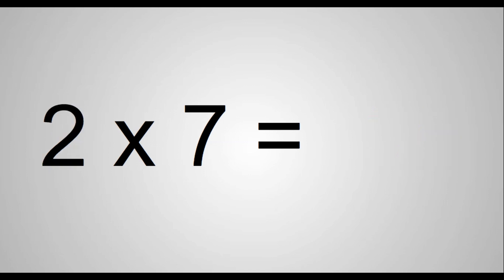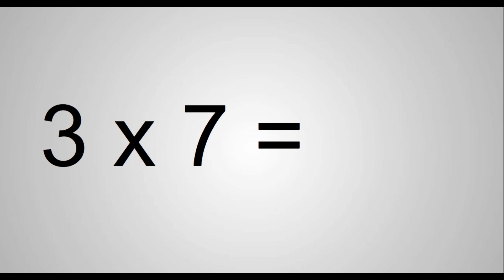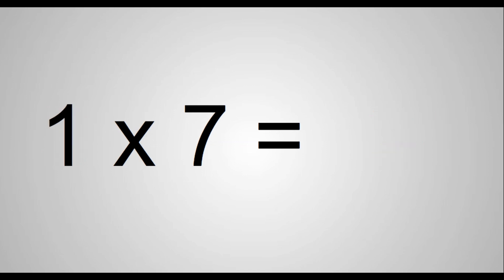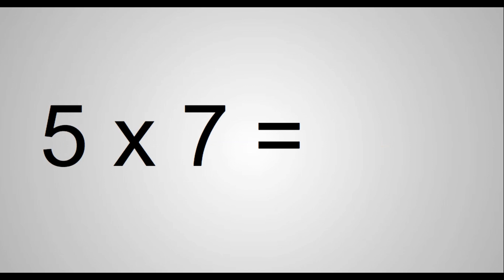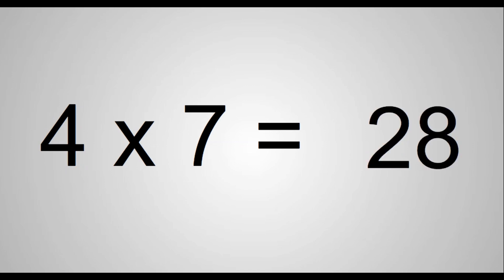2 times 7 equals 14. 3 times 7 equals 21. 1 times 7 equals 7. 5 times 7 equals 35. 4 times 7 equals 28. Now we're going to do the upper times 7.